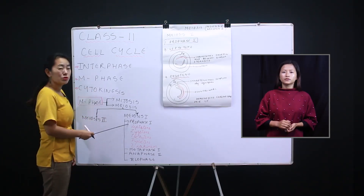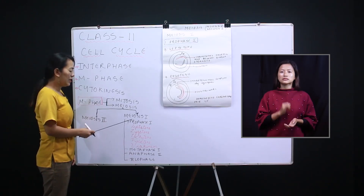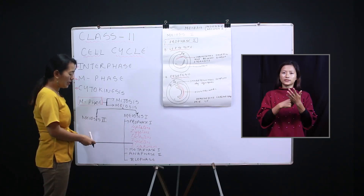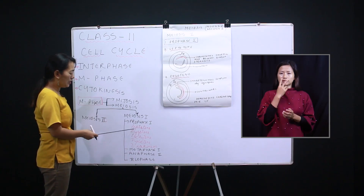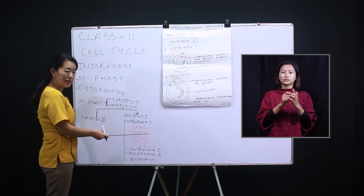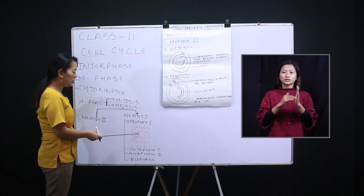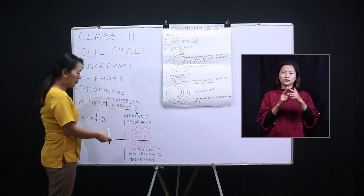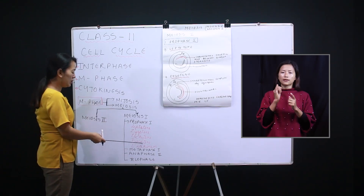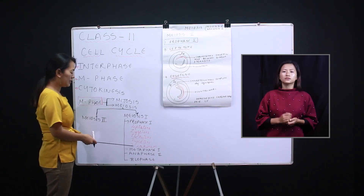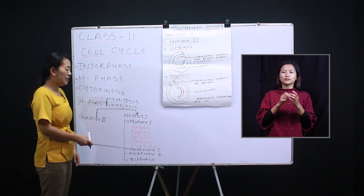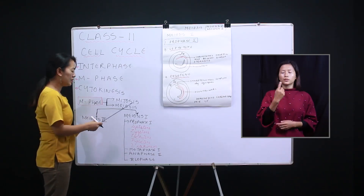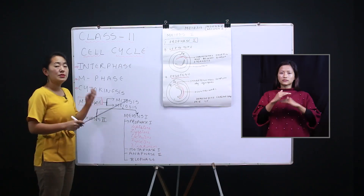The most important part in meiosis is prophase one, which is divided into: leptotene (L-E-P-T-O-T-E-N-E), zygotene (Z-Y-G-O-T-E-N-E), pachytene (P-A-C-H-Y-T-E-N-E), diplotene (D-I-P-L-O-T-E-N-E), and diakinesis (D-I-A-K-I-N-E-S-I-S). This is the stage where the cells become haploid by dividing the number of chromosomes.